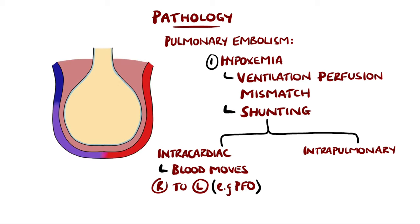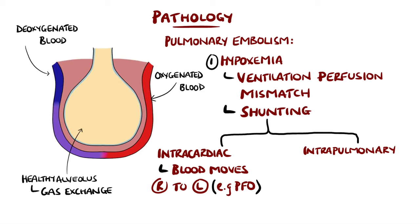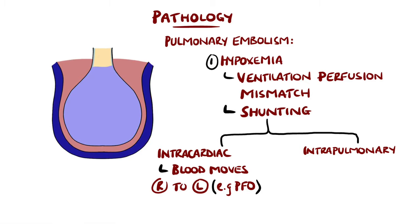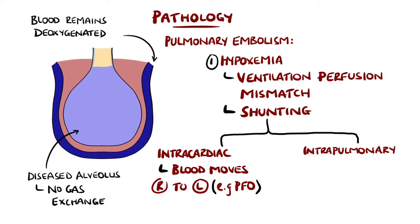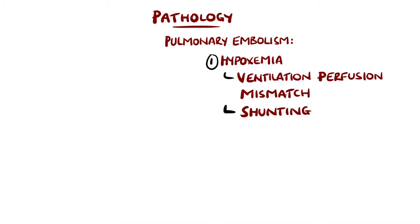Intrapulmonary causes are where blood passes through the lungs without being oxygenated. Normally, deoxygenated blood enters the capillaries from the pulmonary artery, then travels around the alveolus where gas exchange occurs and becomes oxygenated, then taken back to the heart via the pulmonary veins. If the alveolus is filled with fluid, no gas exchange can occur. In a pulmonary embolism, areas of the lung can become ischemic, leading to no gas exchange and therefore a form of intrapulmonary shunting.